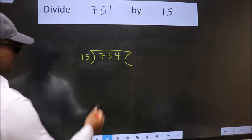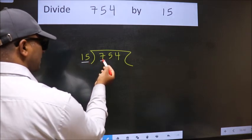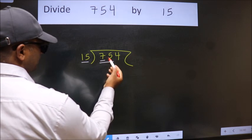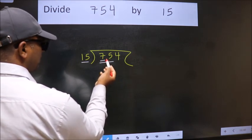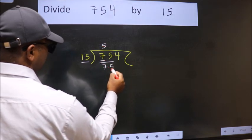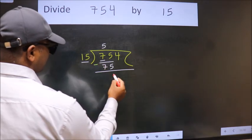Next. Here we have 7. Here 15. 7 is smaller than 15. So we should take two numbers, 75. When do we get 75 in 15 table? 15 fives 75. Now we should subtract. We get 0.